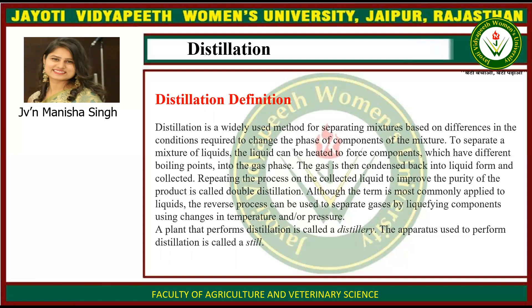Repeating the process on the collected liquid to improve the purity of the product is called double distillation. Although the term is most commonly applied to liquids, the reverse process can be used to separate gases by liquefying components using changes in temperature or pressure. A plant that performs distillation is called a distillery, and the apparatus used to perform distillation is called a still.